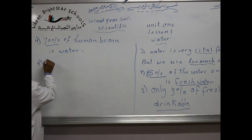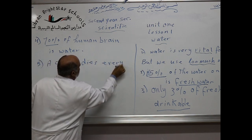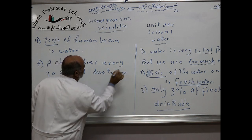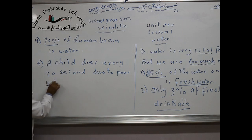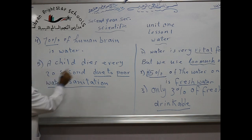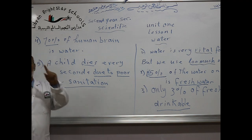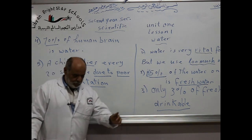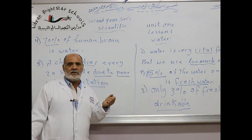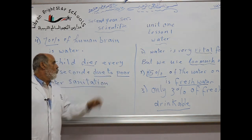There is another piece of information: a child dies every 20 seconds due to poor water sanitation. A child dies every 20 seconds due to poor water sanitation. Poor water sanitation means dirty water.